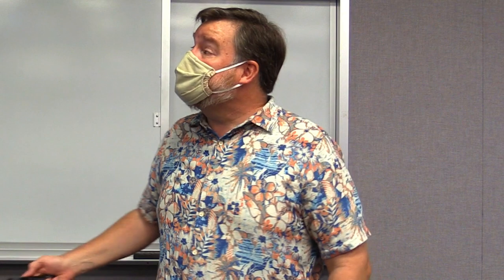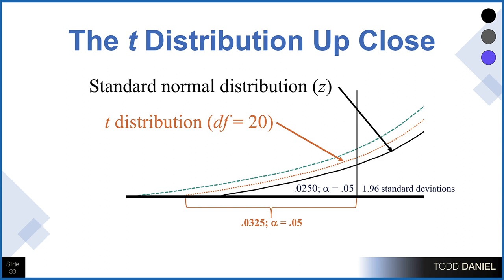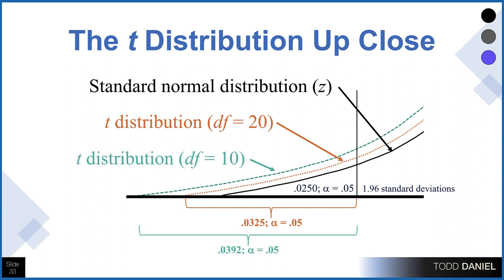You may look at this and think, well, that doesn't look too bad. But let's look at it up close. Here we see our 1.96 standard deviation cutoff for a standard normal distribution, resulting in .025 in each tail. With a degrees of freedom of 20 and the tail extended, the proportion becomes .0325. It gets even worse with a degrees of freedom of 10, where our .025 is enlarged to .0392.